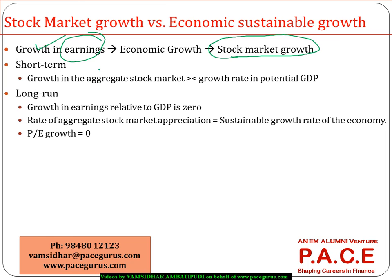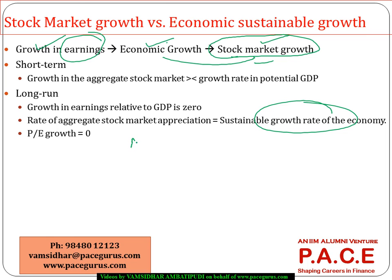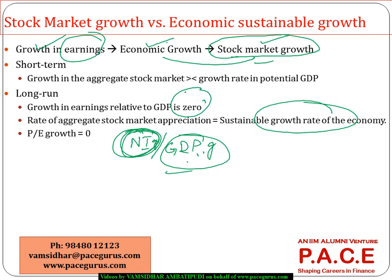What we need to understand is that in the short run, the stock market can grow either at a higher rate or a lower rate than the GDP growth rate — either of these is possible. But in the long run, the stock market growth rate should be the same as the sustainable growth rate of the economy itself. When looking at company earnings measured through net income relative to GDP growth, in the short run this may be higher or lower, but in the long run both should converge to be the same.